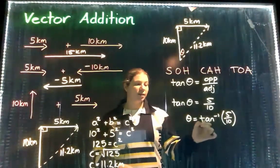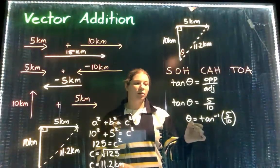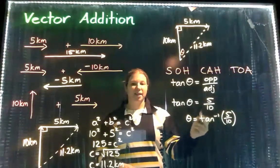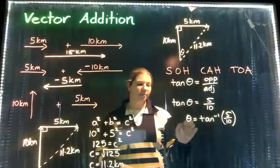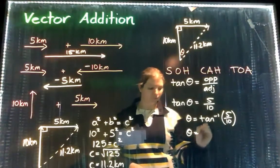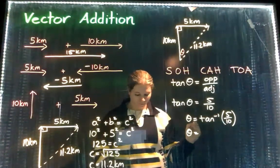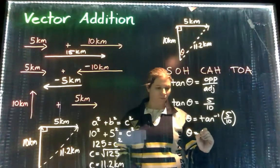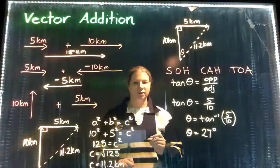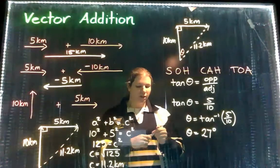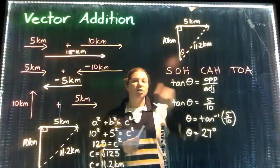To get the tan inverse, or essentially you're dividing by tan, to get that in your calculator you want to press your shift button and then tan. I'm just going to round it to 27 degrees. So now we have that this angle here is 27 degrees.